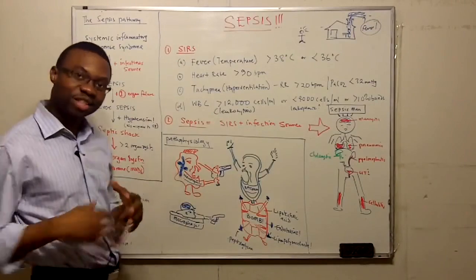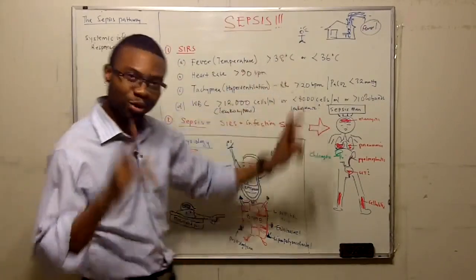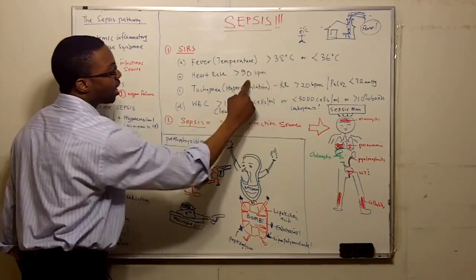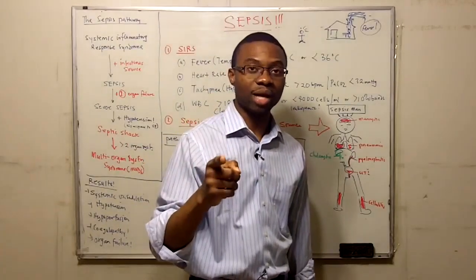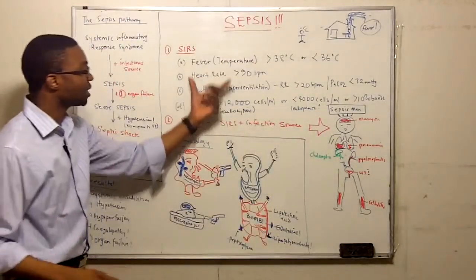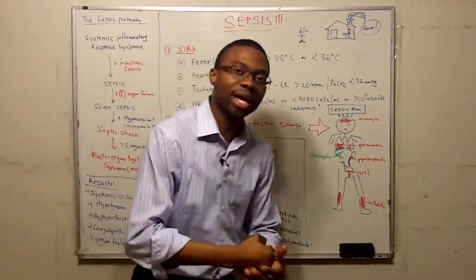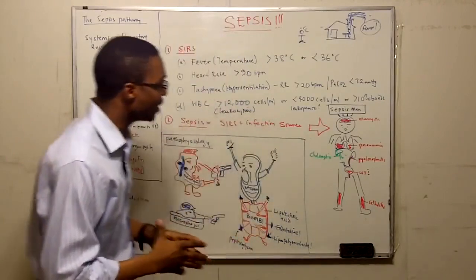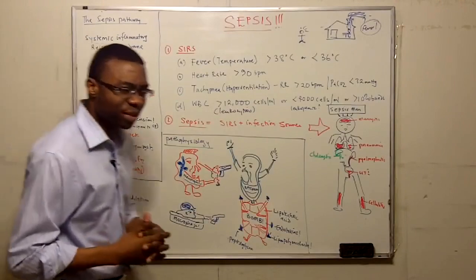So what is the definition of SIRS again? You need two. Two of this. If the patient has just a fever, greater than 38, and the heart rate is up, that is systemic inflammatory response syndrome. You got to memorize this. Please memorize this. They will ask you one day. This is super high yield.